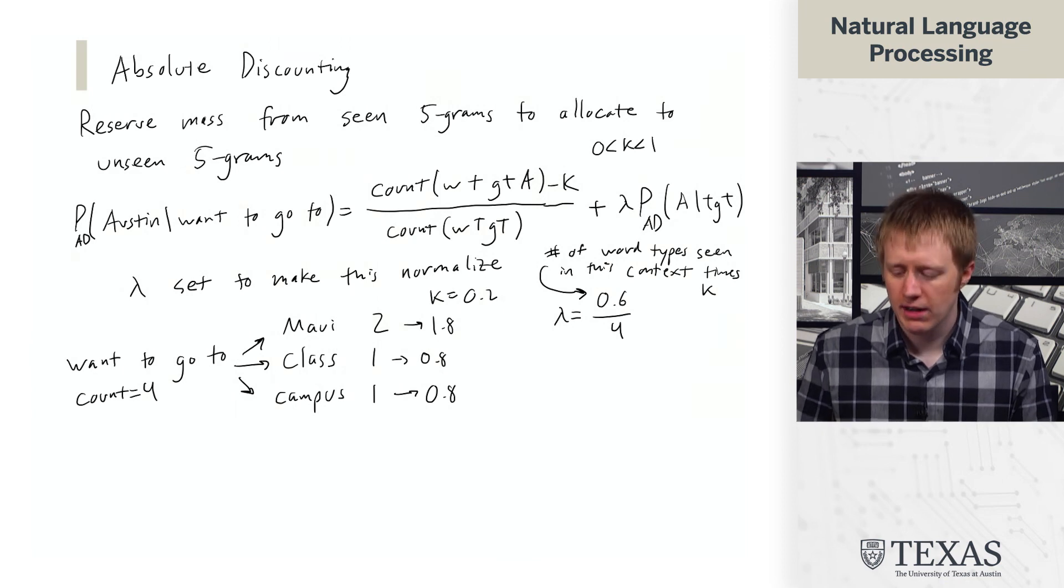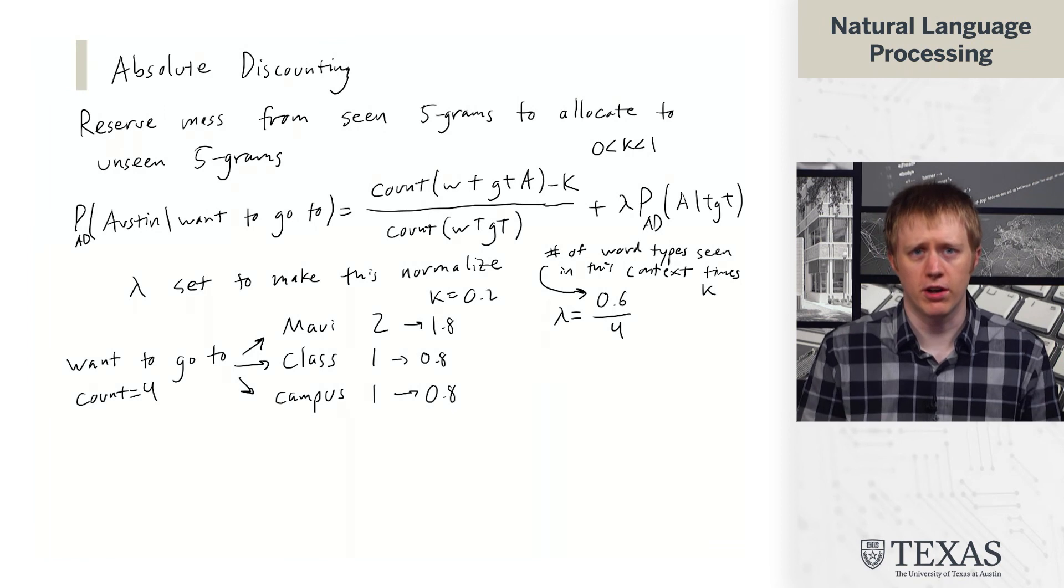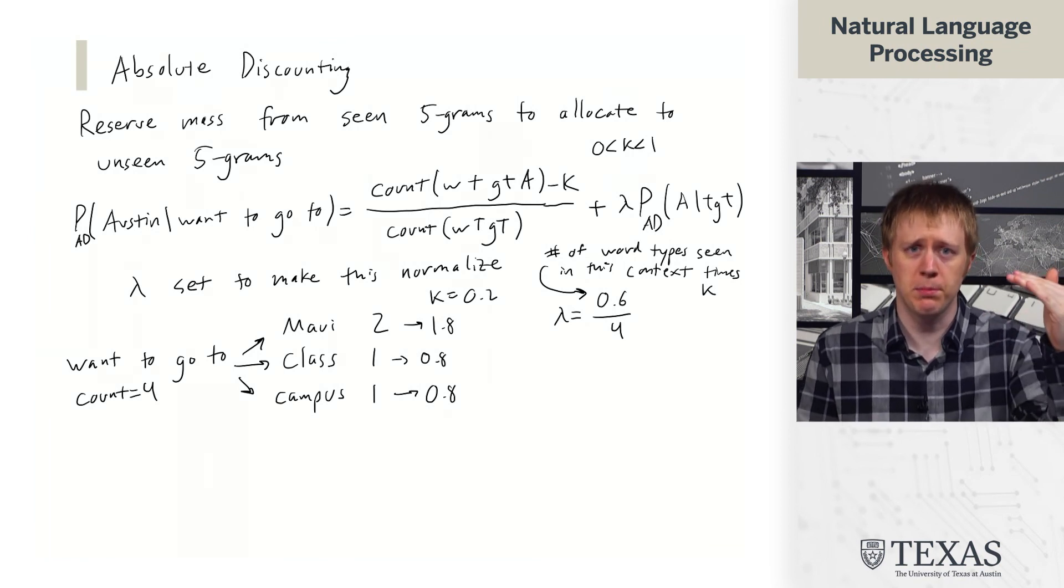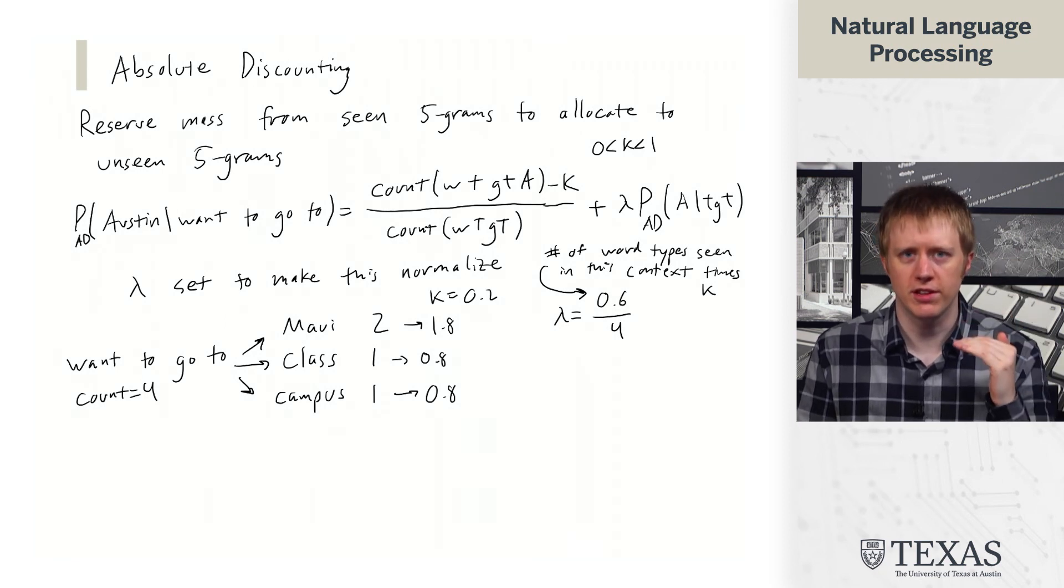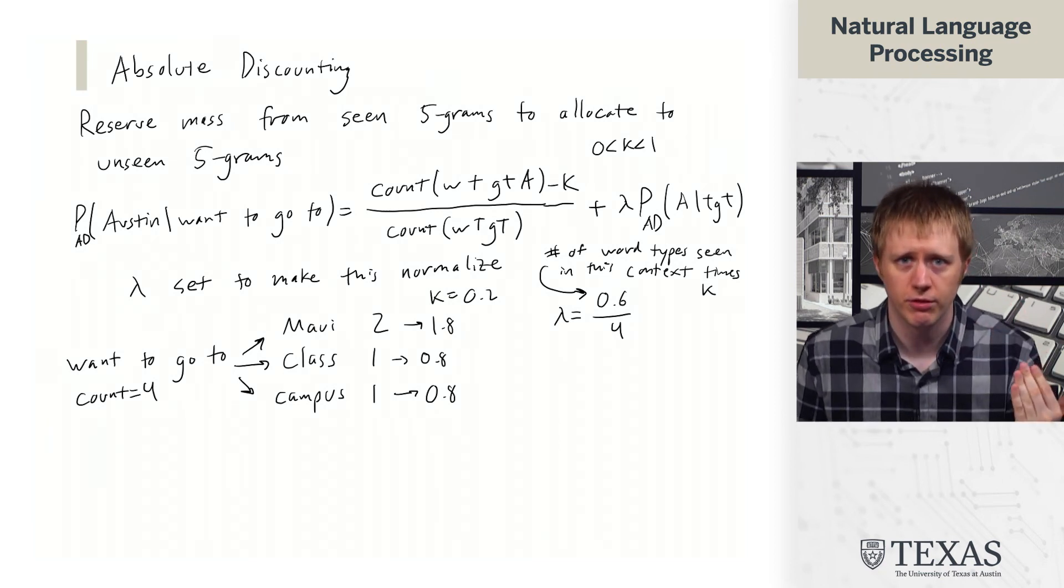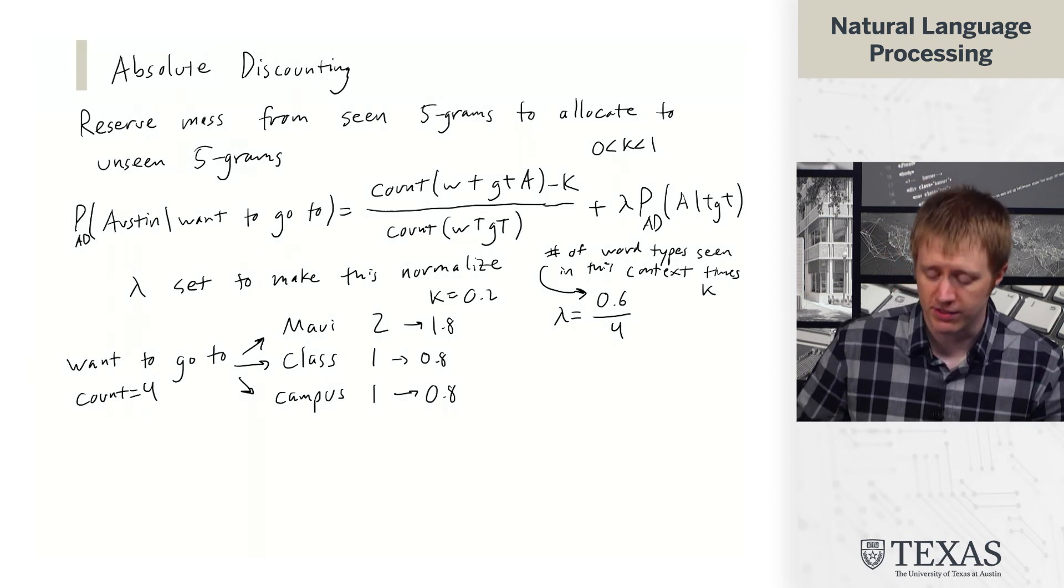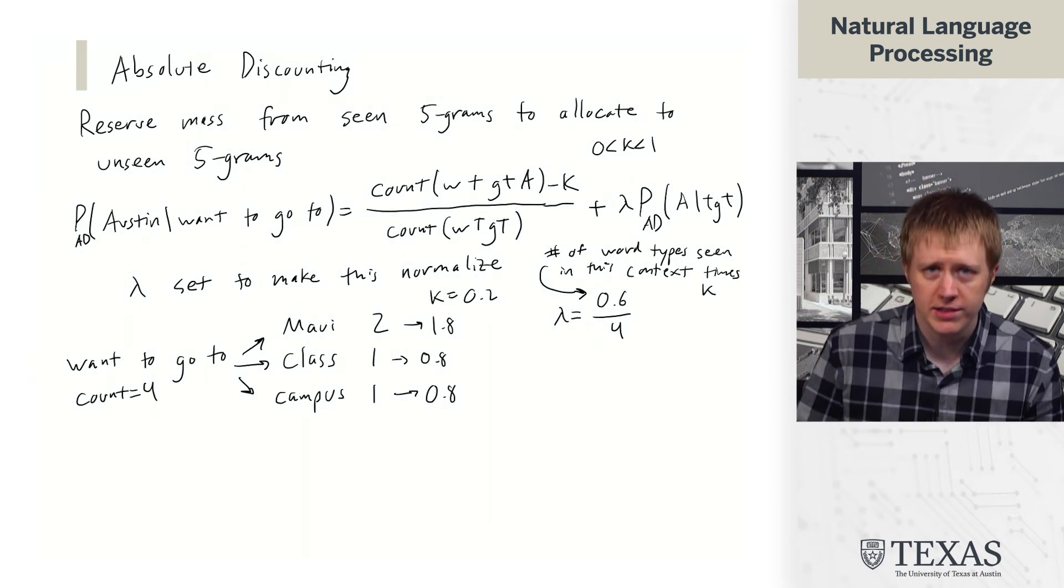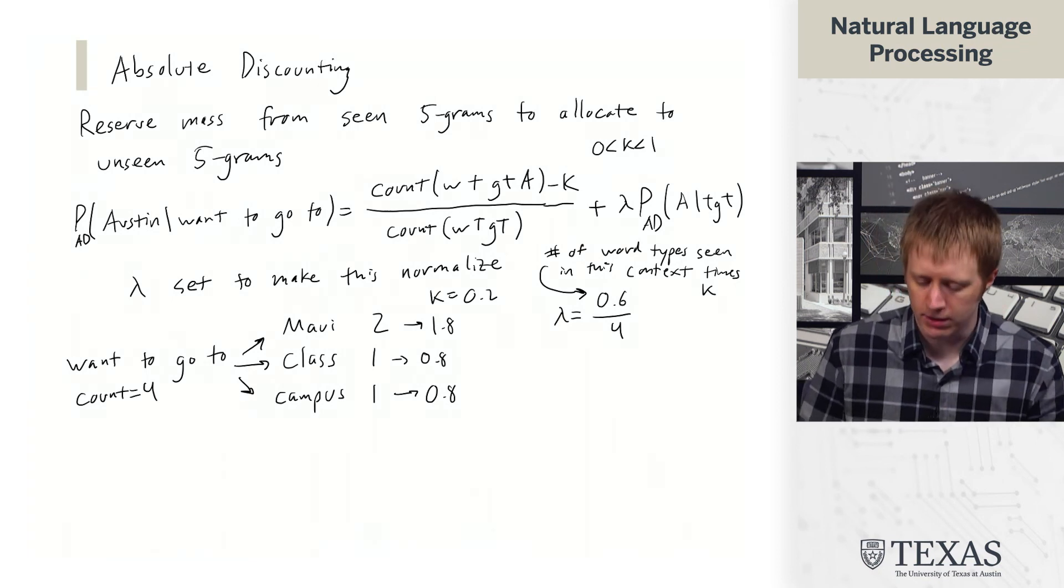And so what this has allowed us to do is it says, all right, we have these four occurrences, right? But instead of saying we have a 50% chance of Maui, 25% chance of class, 25% chance of campus. Instead, we've decreased all these counts a bit. We've turned this down to, you know, whatever 1.8 over 4 is, chance of Maui, 0.8 over 4 chance of class, 0.8 over 4 chance of campus. And now we have this 0.6 over 4 times a lower order model.